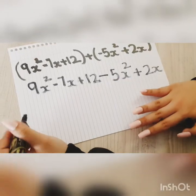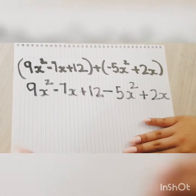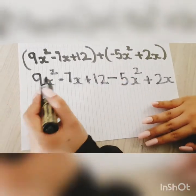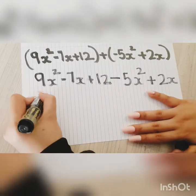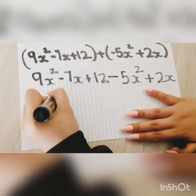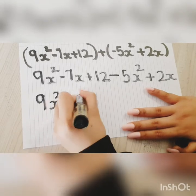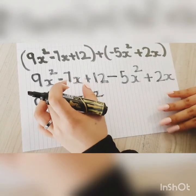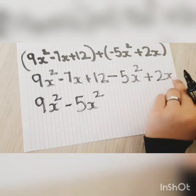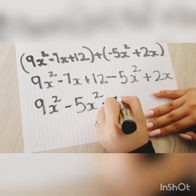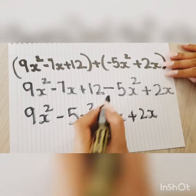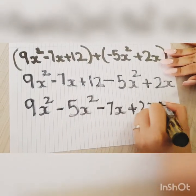Now the next step is to take down the like terms. What are like terms? Like terms are basically terms that have similar variables and power. So over here we have 9x² - 5x² minus the next two similar terms that is -7x and +2x. So -7x + 2x and the remaining constant that is +12.